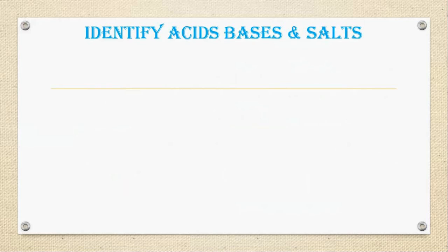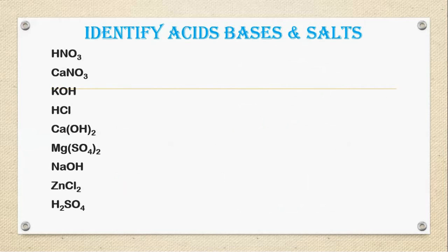Now there is a small quiz for you. You need to identify acids, bases and salt from these chemical formulas. So I am displaying you some formulas. HNO3, Ca(NO3)2, KOH, HCl, Ca(OH)2, Mg(SO4)2, NaOH, ZnCl2, H2SO4. Now can you identify? Before that, hints you need to remember.